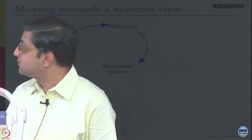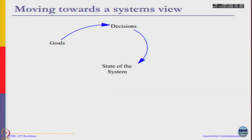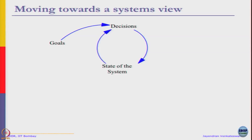Moving towards the systems view: we have goals, and based on the goals we take decisions that influence the state of the system. This is just a kind of curved diagram of the same linear diagram we saw a few minutes ago. This alone is not enough — we do not have abstract goals; the goals are always related to the state of the system. Based on the state and the goals, based on the gaps, we take decisions, but as soon as you take decisions that is going to affect the state of the system, which will force us to make more decisions in the future.